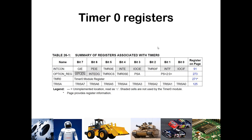TMR0 is the register that continually increments every time there is a timing or clock edge event. TRISA is also relevant because if you're using the external T0CKI as an input, you need to make sure that pin is configured as an input on port A by setting TRISA accordingly.